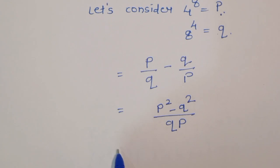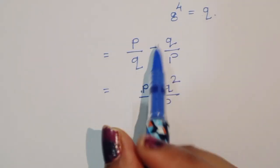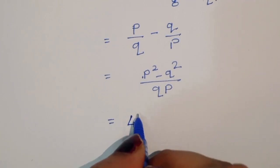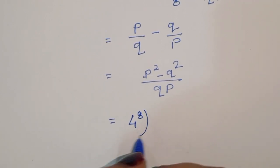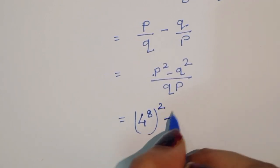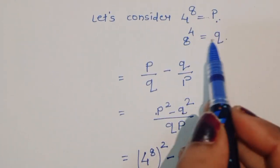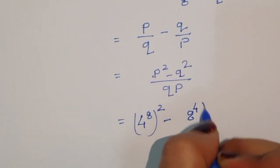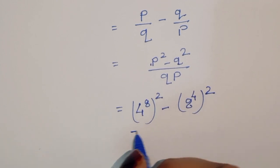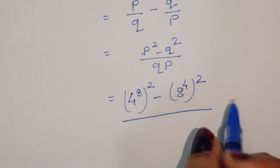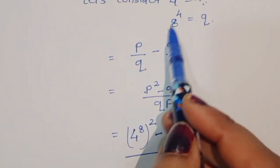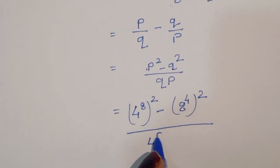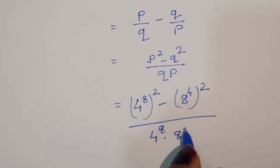Now, P squared is (4 power 8) squared, and Q squared is (8 power 4) squared. So the numerator is (4 power 8) squared minus (8 power 4) squared, divided by QP, which is 8 power 4 times 4 power 8.